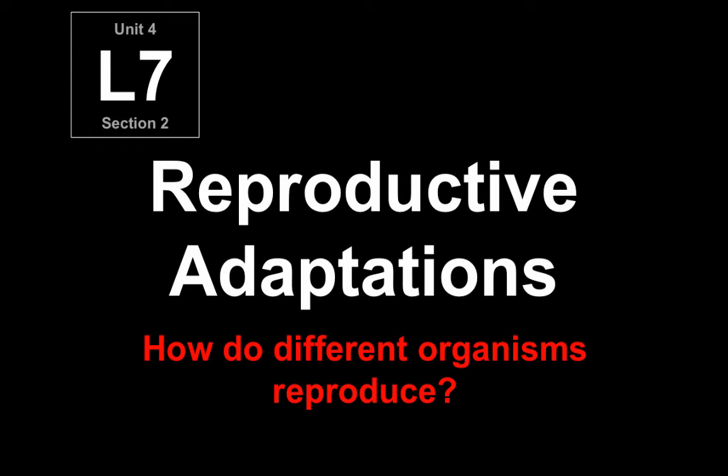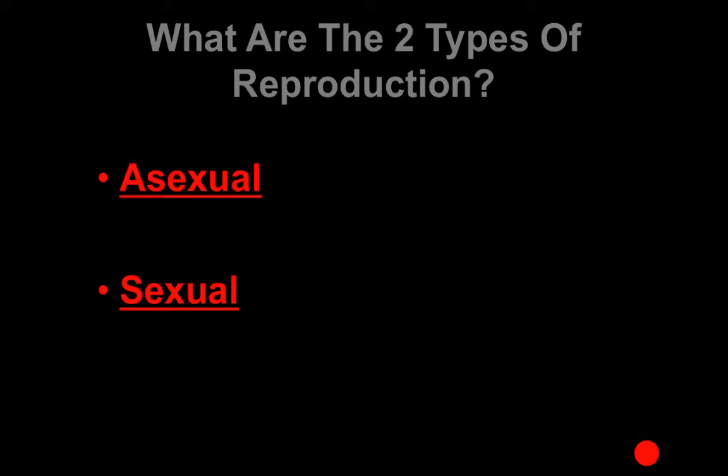In this lesson we're going to look at reproductive adaptations. So first let's look at the two types of reproduction: asexual and sexual.